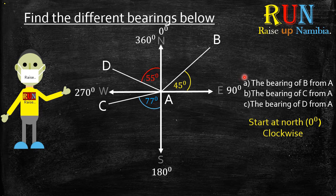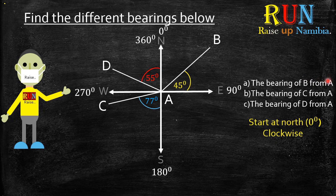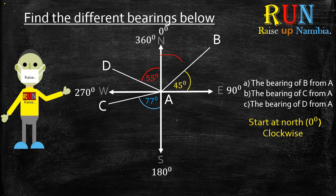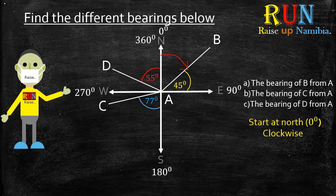So let's start with A. We are looking for the bearing of B from A. So it says from A. Where is A? So A is here, meaning A is in the middle. Where is B? B is up here. Meaning what we are looking for is actually, now remember you have to start from the north. What we are looking for is actually from the north towards B, meaning it's until here.